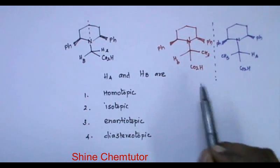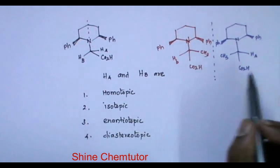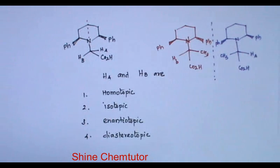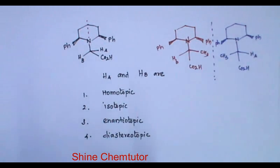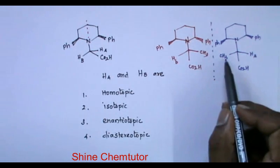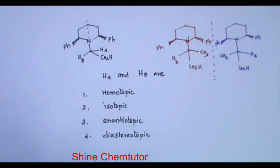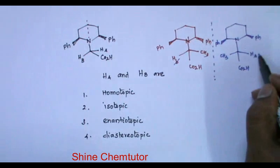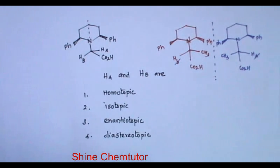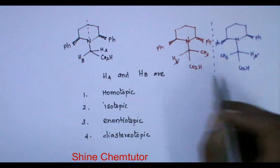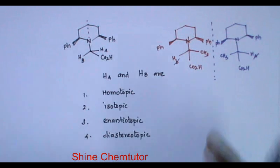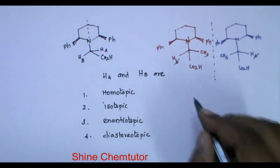Now what is the relation between these two? Anyone can easily predict that they are mirror images. You can see here this Ph, this Ph, they are available. This CH3 is here. And hydrogen, you should not consider this HA and HB. So basically it is hydrogen, a spherical atom. And this CO2H is still there. So these two are just mirror images.